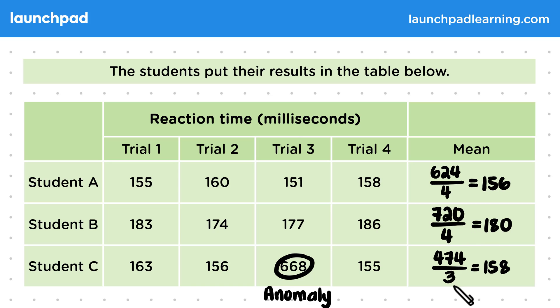You might have noticed here that we've divided the value by three. That's because we removed the anomaly. So the values we used were these three and not the anomaly.